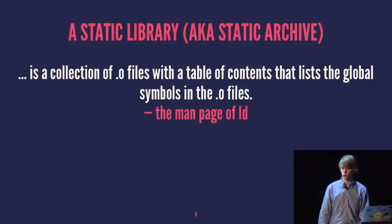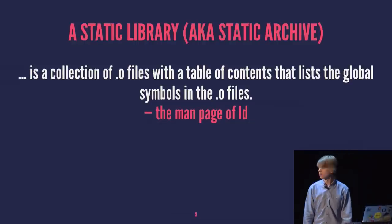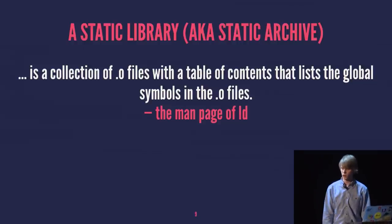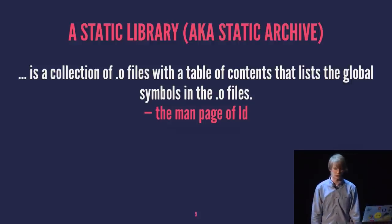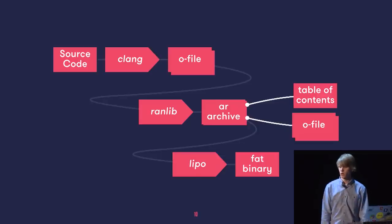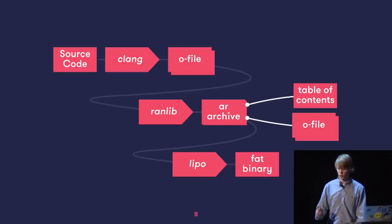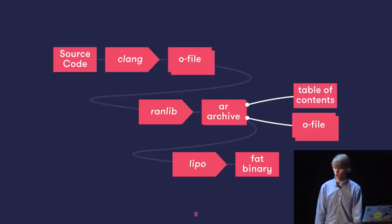Let's dive directly into static libraries. What is a static library? Looking at the man page of LD, it says it's a collection of object files and a table of contents. The source code is given into Clang or SwiftC, which compiles and makes object files. For static libraries, we feed those object files into ranlib, and ranlib builds the archive — that's the table of contents together with the object files.